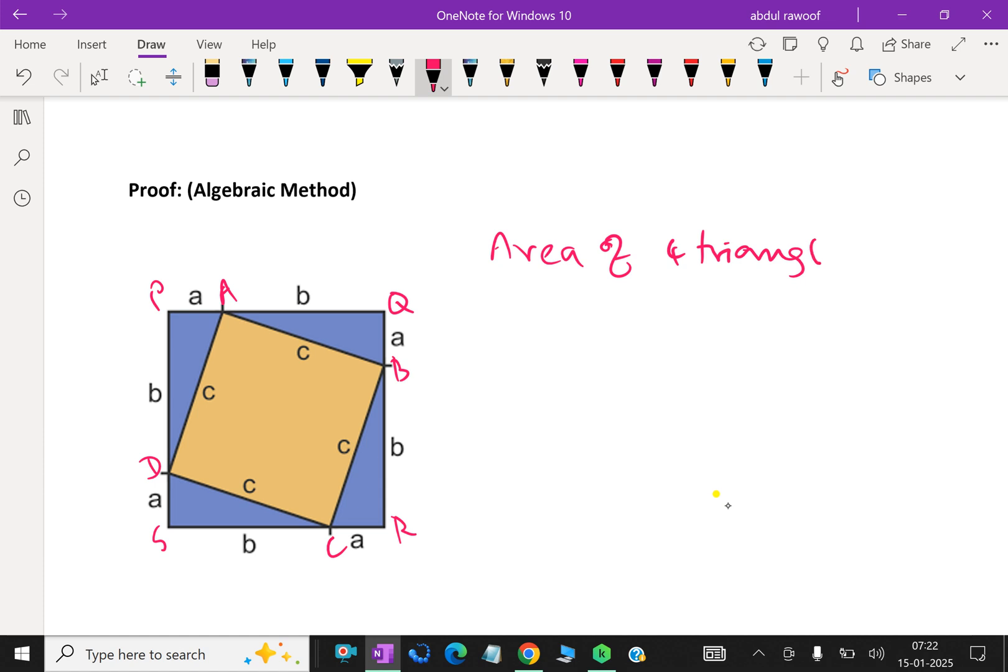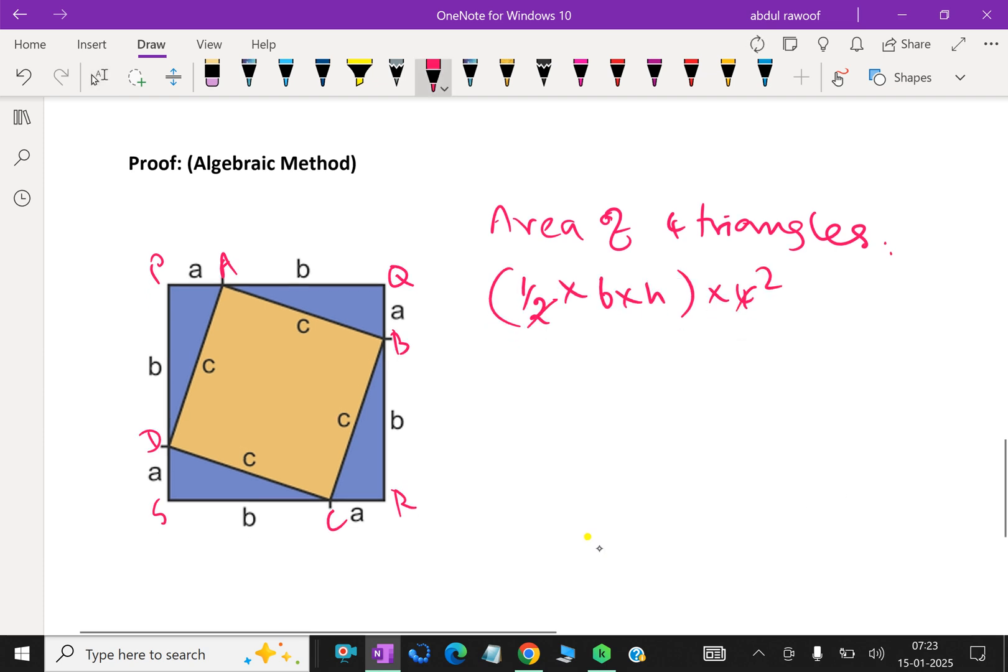Therefore, four triangles, half into base into height, into four triangles, because four congruent triangles, which is equal to 2AB. That means the sum of the area of the four triangles is 2AB.